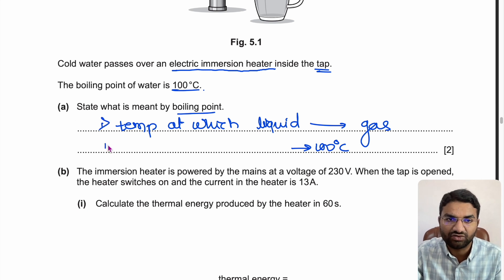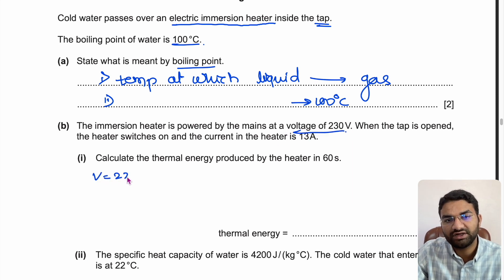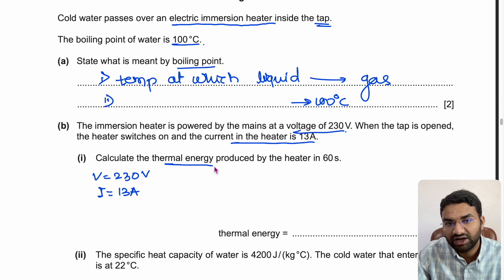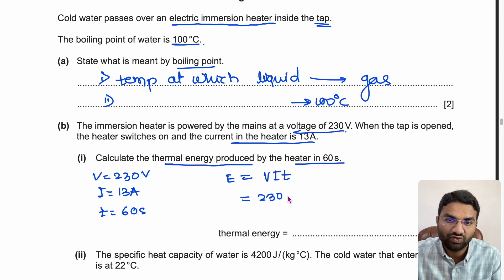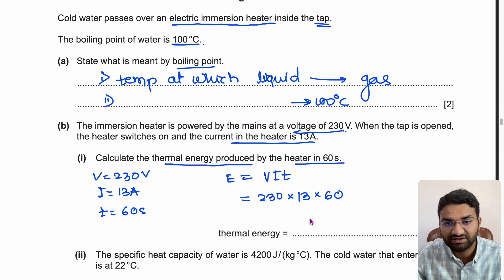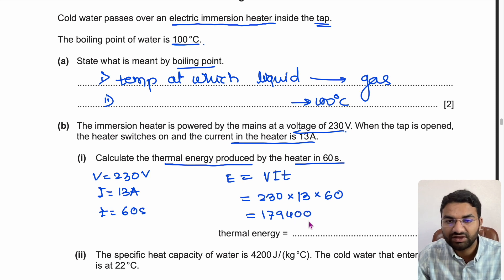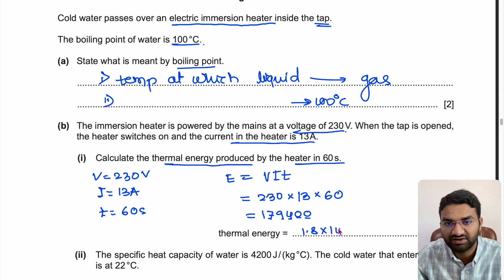The immersion heater is powered by the mains at V = 230 V. When the tap is open the heater switches on and the current is I = 13 A. Calculate the thermal energy produced by the heater in 60 seconds. E = VIt = 230 × 13 × 60 = 179,400 J, which in standard form is approximately 1.8×10⁵ J.